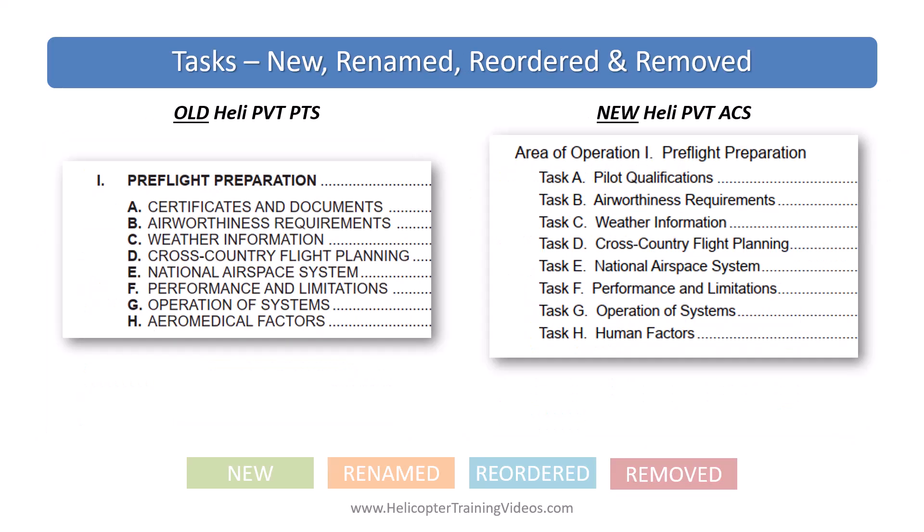Now we're going to go through how the tasks themselves have been renamed and reordered — not the actual content of the task changes, which will be in the next couple of videos. Under pre-flight preparation, certificates and documents has been changed to just pilot qualifications. The reason is that about half of that content, which was regarding the certificates and documents for the aircraft, has been moved into task B, the airworthiness requirements. So task A is really just about the pilot. Aeromedical factors was renamed to human factors, but the general content is mostly the same.